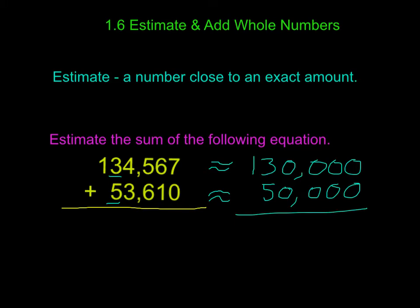Then we're going to add these two together to get our estimated sum. 0 plus 0 is 0, 0 plus 0 is 0, 0 plus 0 is 0, and 5 plus 3 is 8. Then we bring down our 1 plus 0 is 1, for an estimate of 180,000. That's stating that 134,567 plus 53,610 is going to be about 180,000.